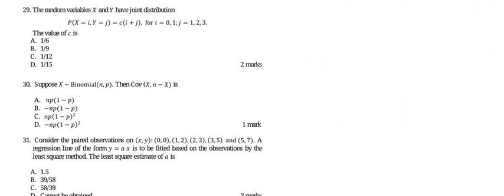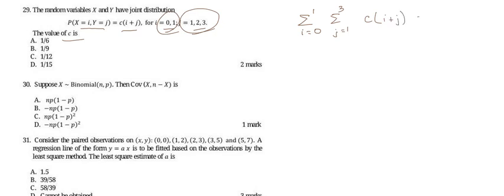Question 29: the random variables X and Y have joint distribution P(X=i, Y=j) = c·(i+j) for i = 0, 1 and j = 1, 2, 3. The value of c is. To find c, we use the fact that the double summation over i from 0 to 1 and j from 1 to 3 of c·(i+j) must equal 1.